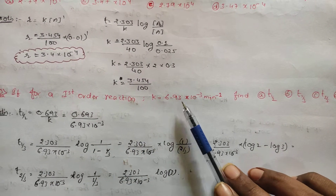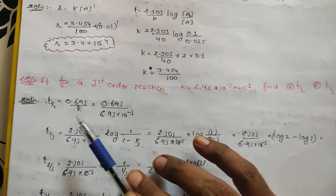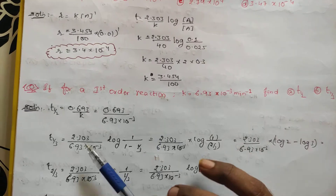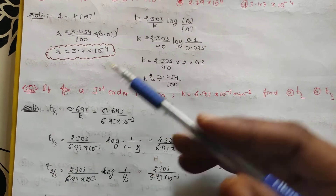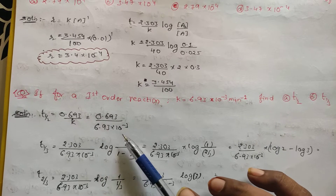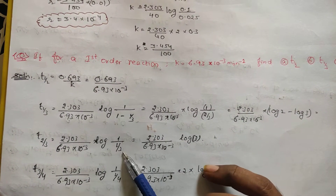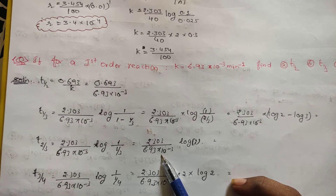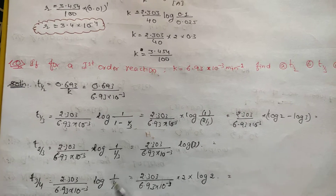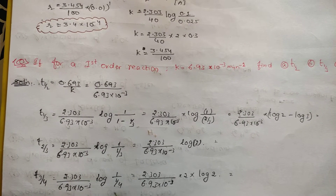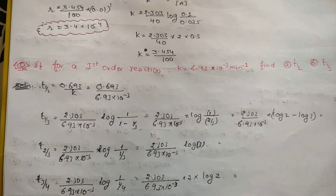Problem 4: Given K = 6.93×10⁻³ min⁻¹, find T½, T₁/₃, T₂/₃, T₃/₄. T½ = 0.693/K = 100 min. T₁/₃: 1/3 completed means 2/3 remains; use (2.303/K)·log(1/(2/3)) = (2.303/K)·log(3/2). T₂/₃: 2/3 completed means 1/3 remains; use (2.303/K)·log 3, log 3 = 0.475. T₃/₄: 3/4 completed means 1/4 remains; use (2.303/K)·log 4.